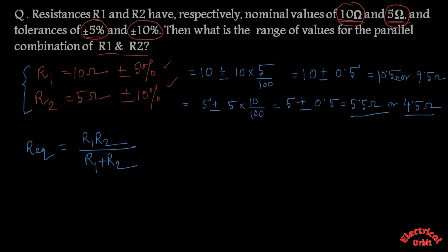So higher range value of R1 equals 10.5 ohm and for R2 it is 5.5 ohm. By simply putting these values we get 3.61 ohm.